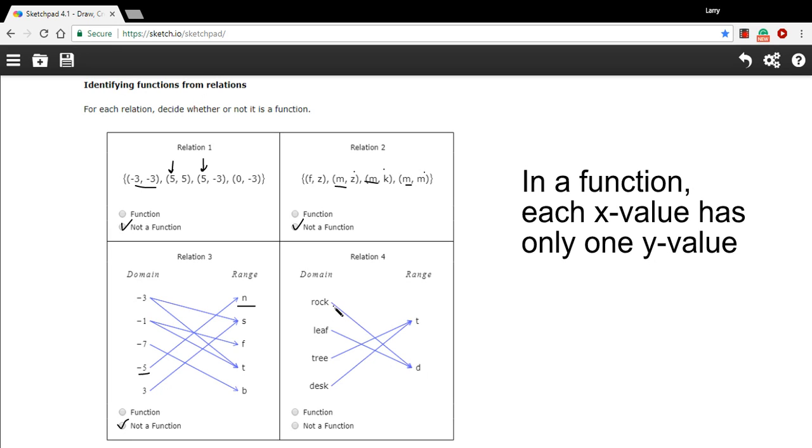Now this one, we've got only one arrow coming off of each x value here. They double up on the y values, but that's okay. As long as each x value just has one y value, then that would be a function. So this one is a function.